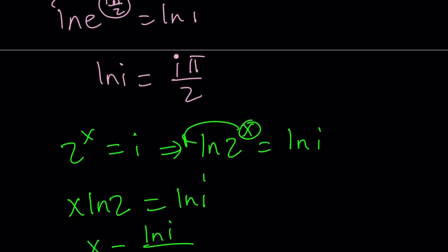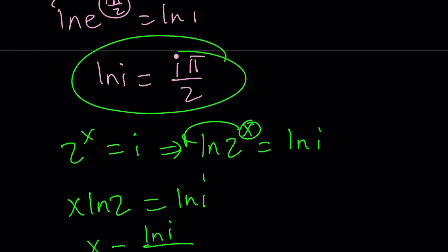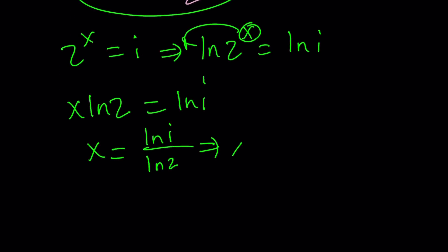But, since ln i can be written like this, we can go ahead and replace it. And, from here, x is going to become i pi over 2 times ln 2. You can also write the 2 times ln 2 as ln 4 if you want, but that's not necessary. But, this is approximately 2.27i.